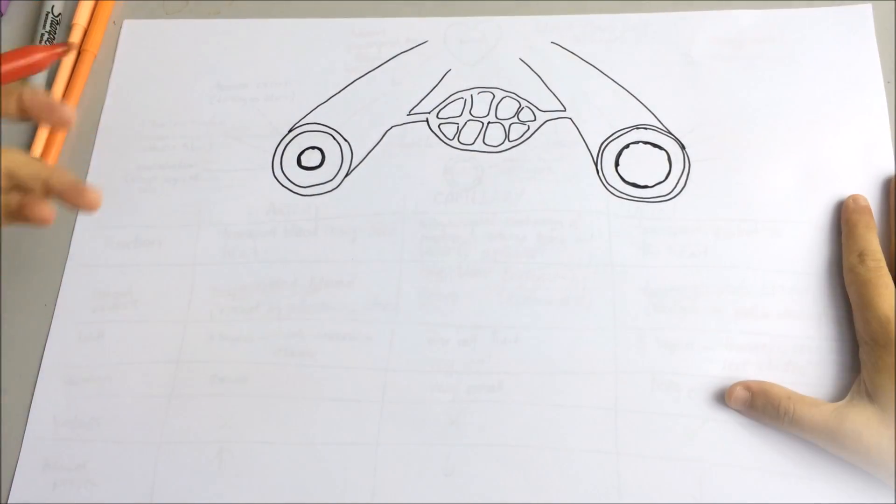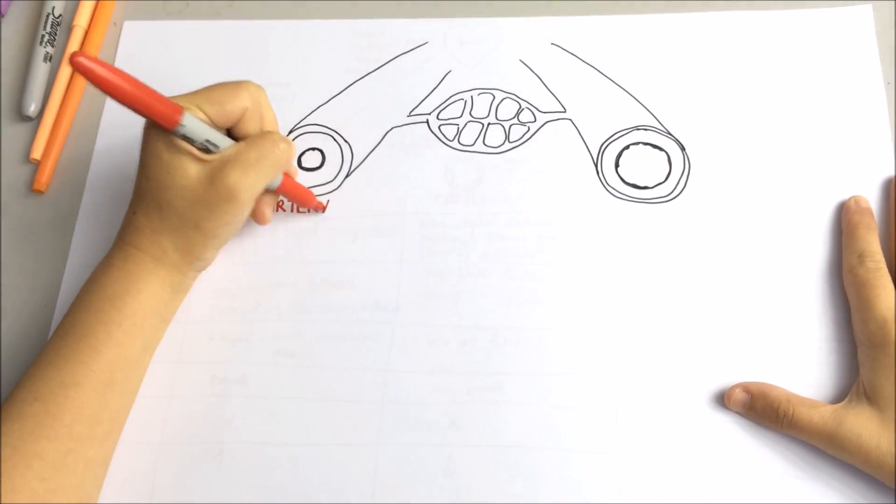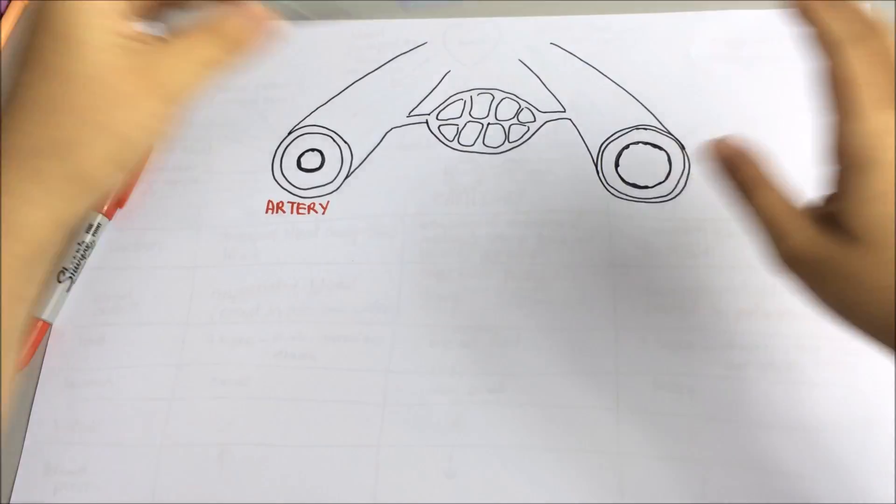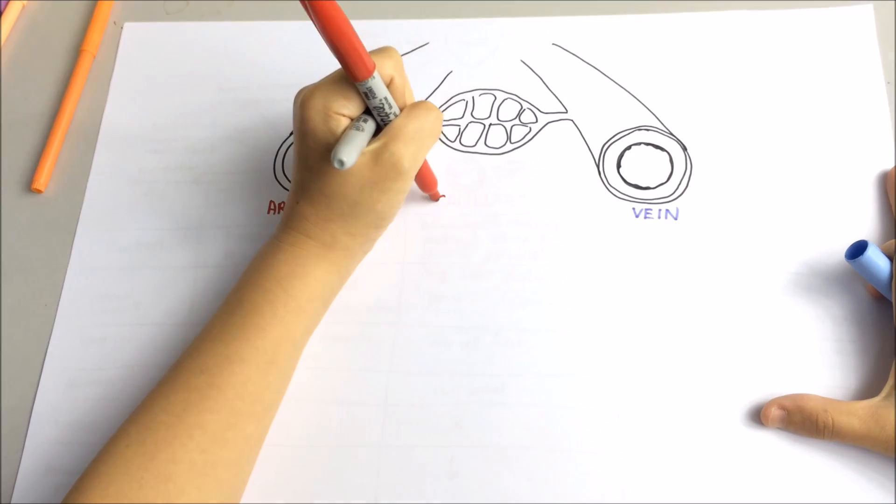There are three main types of blood vessels which are artery, vein and capillary.